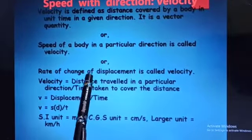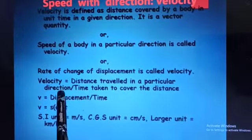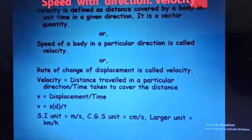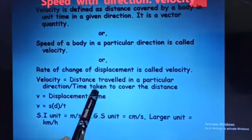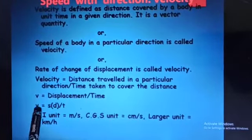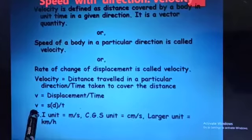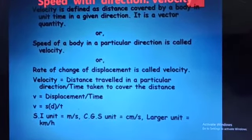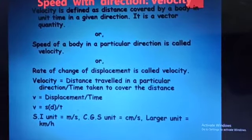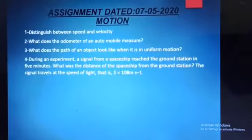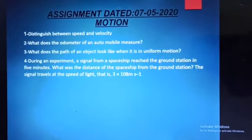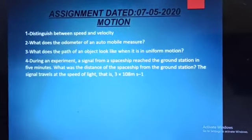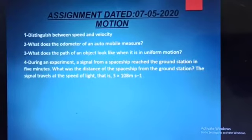Velocity equals distance traveled in a particular direction divided by the time taken, where v is equal to displacement upon time, or v = s/t. The SI unit is meter per second and the larger unit is kilometer per hour. This is all about this topic. You can read it after class and complete the assignment. Thank you, have a nice day.